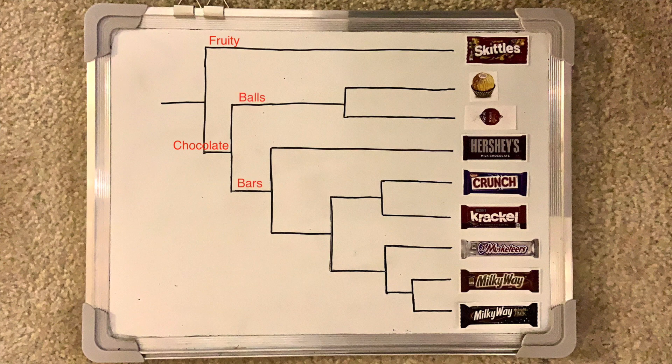The next divergent event splits into balls versus bars. Ferrero Rocher and Lindt Truffles are both ball-shaped, indicating that their most recent common ancestor evolved this trait, and therefore they are closely related. Ferrero Rocher has nuts, while Lindt Truffles do not.